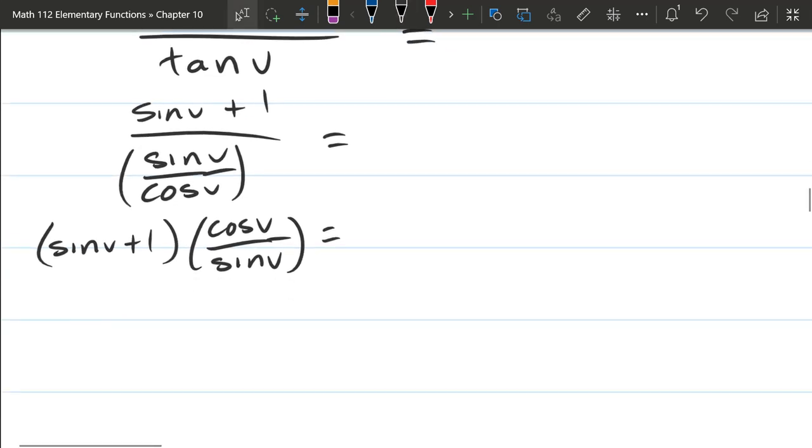And if I multiply in here, so I'm just distributing across the addition. So sine v divided by sine v cancels, so this leaves me with cos v plus 1 times cos v over sine v.